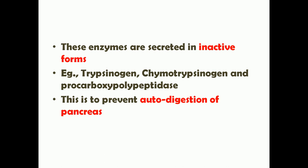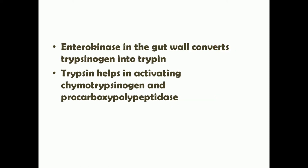All the digestive enzymes in the pancreas are secreted in inactive form. For example, they are secreted as trypsinogen, chymotrypsinogen, and pro-carboxypeptidase. This is because if they were secreted in active form, those enzymes would act on the pancreatic tissue and cause destruction or autodigestion, leading to pancreatitis. This is prevented by secreting these enzymes in inactive form.